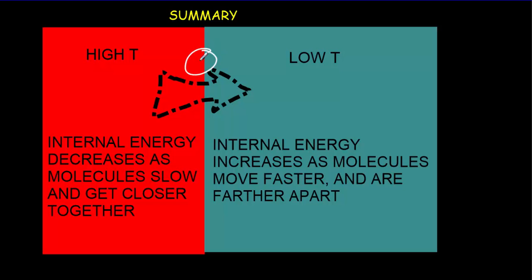Summarizing that relationship: energy gets transferred from a high temperature object to a low temperature object. The internal energy of the high temperature object decreases by Q — kinetic energy decreases, molecules move more slowly, and potential energy decreases, meaning molecules get a little bit closer together. On the other side, the internal energy of the low temperature object increases by Q — molecules move a little faster, have more kinetic energy, and get a little more separated, increasing their potential energy. The internal energy of the low temperature substance increases by the same amount that the high temperature substance decreases.